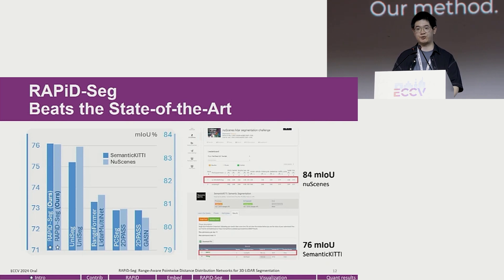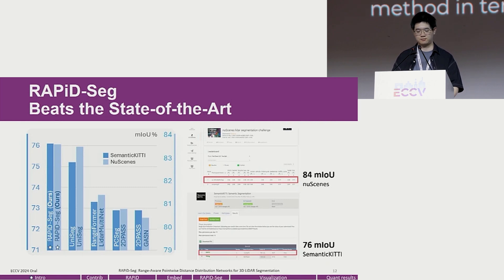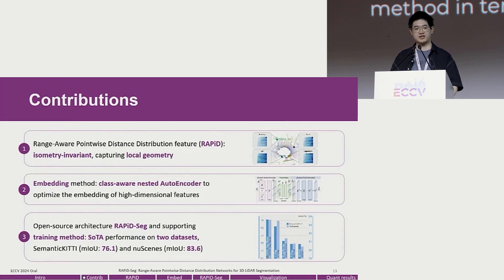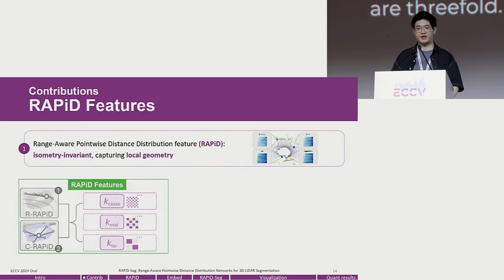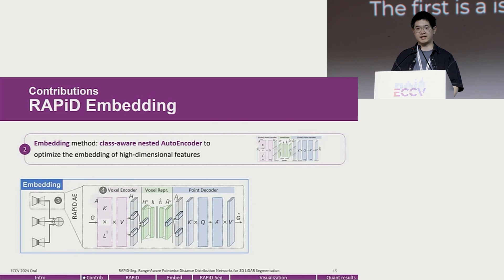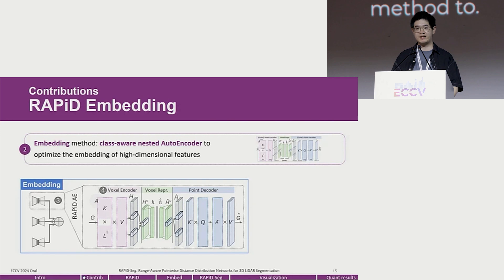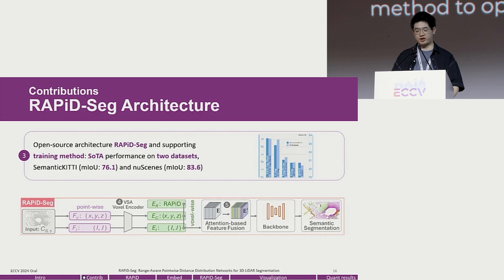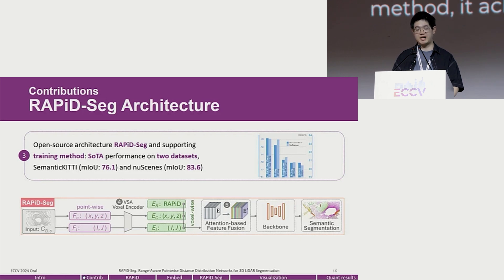Our method outperforms contemporary LiDAR segmentation methods in terms of mIOU on the SemanticKITTI and nuScenes datasets. Our contributions are threefold: first, an isometry-invariant RAPID feature to capture local geometry; second, a class-aware nested autoencoder embedding method to optimize high-dimensional feature embeddings; and third, the RAPID-seq architecture with a supporting training method achieving strong performance on two mainstream tasks.